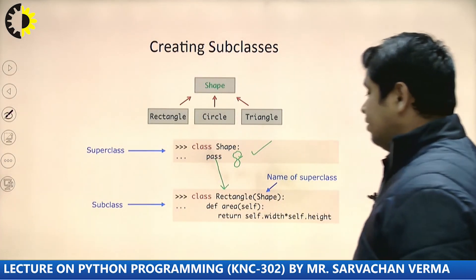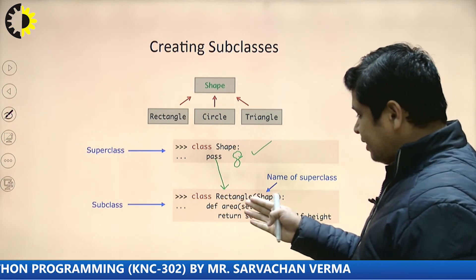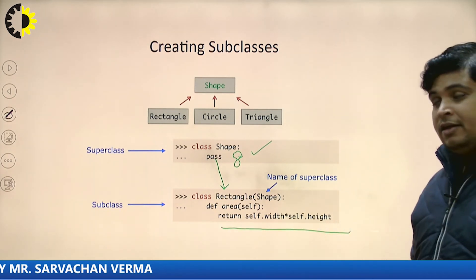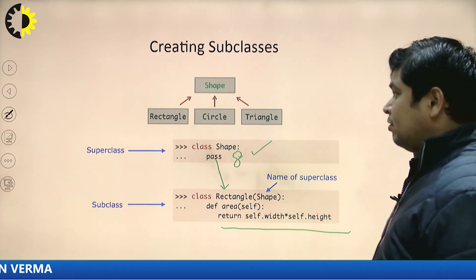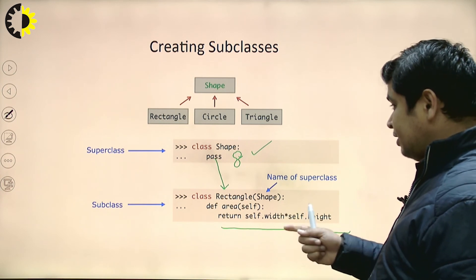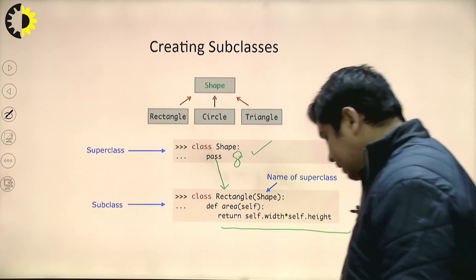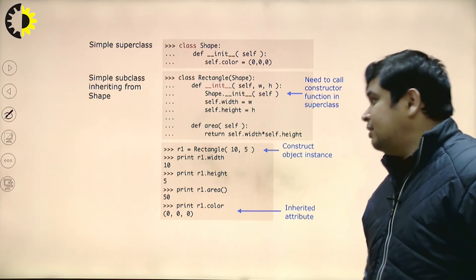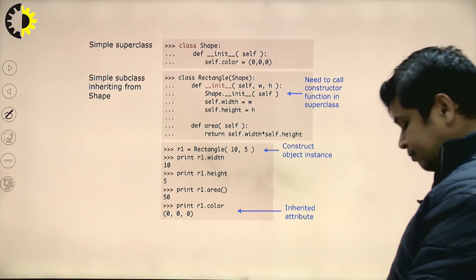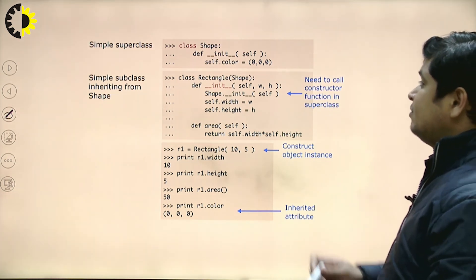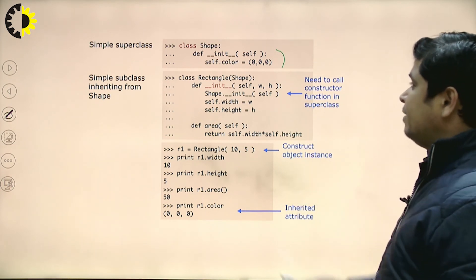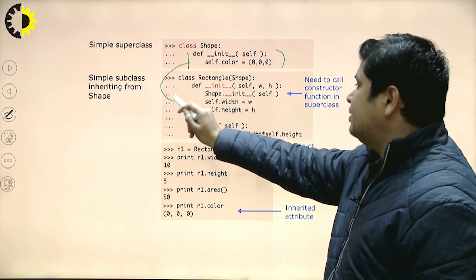This is the beauty of inheritance. Inside the Rectangle class we have one function called area, and I am going to return the area of a particular dimension. So the concept is how we can create the subclass — Shape is the parent class and Rectangle is a subclass. In this example, this is a simple superclass Shape. Inside the superclass Shape, I have one constructor. Rectangle class inherits the Shape class, so by default all the properties come inside this class.